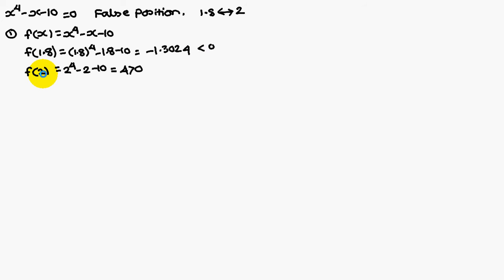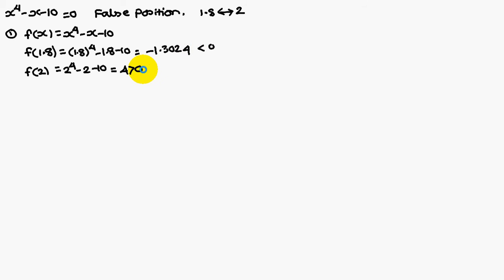Similarly, f(2): replace x with 2 and simplify, you are going to get 4, a positive value. Therefore, the root lies between two consecutive opposite signs — f(1.8) is negative, f(2) is positive. Therefore, root lies between 1.8 and 2.